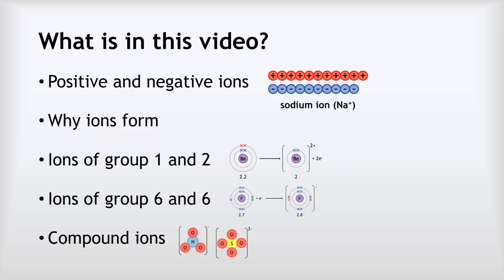In this video, we are going to start by looking at positive and negative ions and how they form. We'll look at why ions form, then we're going to look at the details of the ions of groups 1 and 2, which are quite similar, and then we'll look at the details of ions for groups 6 and 7, which are also quite similar. And then we'll finish off looking at some of the compound ions — those ions that have more than one atom in them.